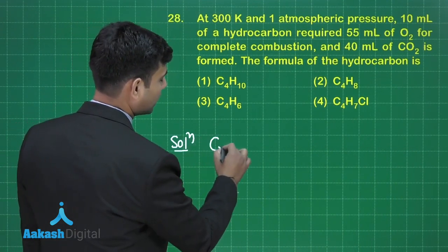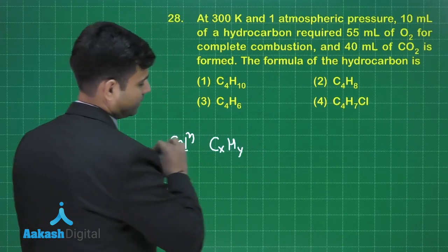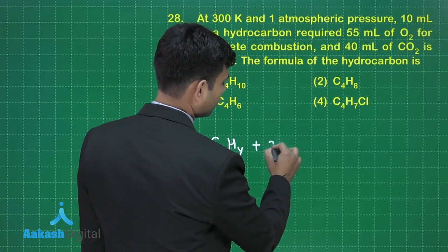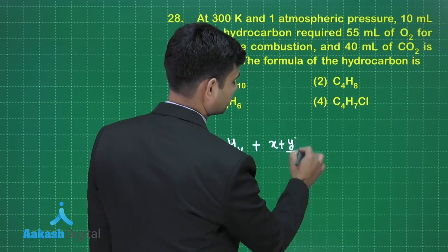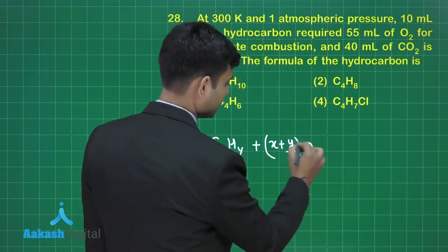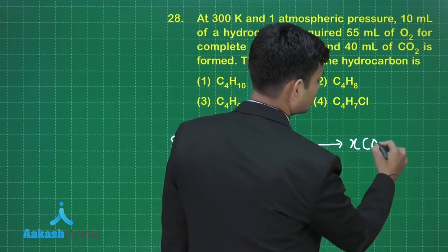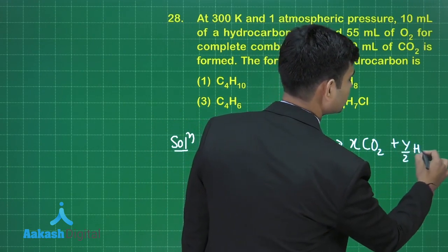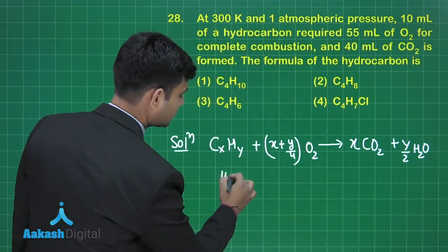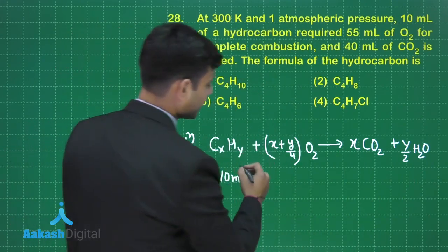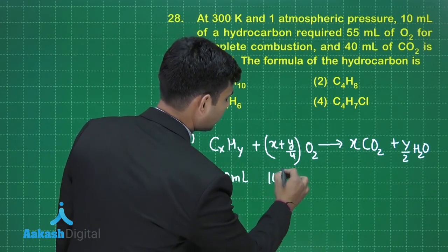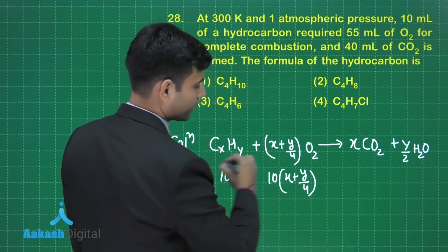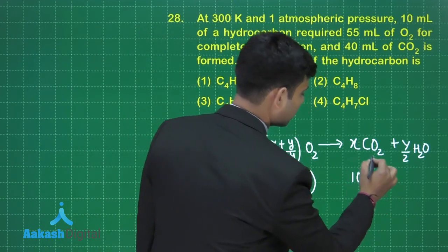Let us consider the hydrocarbon as CxHy. It reacts with O2 — requiring (x + y/4) moles of O2 — giving x moles of CO2 and y/2 moles of H2O. If we have 10 ml of CxHy, it will react with 10(x + y/4) ml of O2 to give 10x ml of CO2.